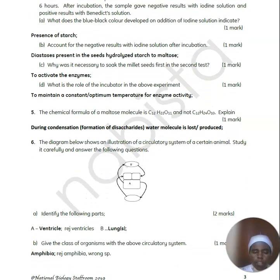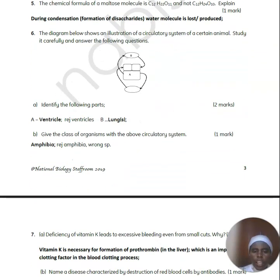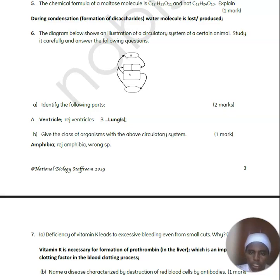The chemical formula of a maltose molecule is C12H22O11 and not C12H24O10 because during the condensation of disaccharides, a water molecule is lost or produced.